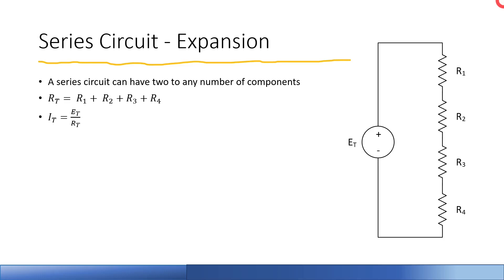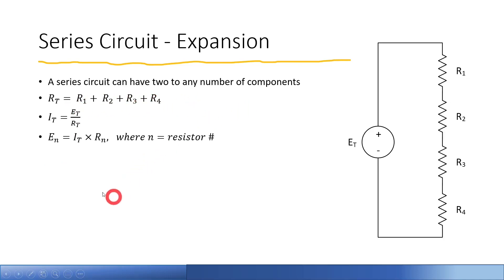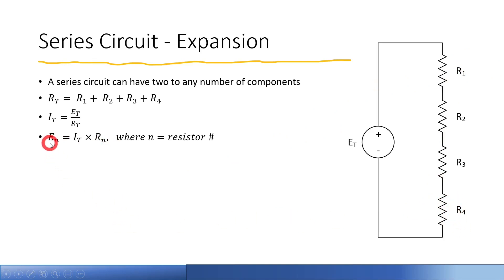We can use our total resistance value and our total voltage value to get our total current value. To get individual voltage drops, we use the same formula. The letter N represents whatever number resistor you're talking about — substitute the number in. For example, if you're talking about the last resistor, you'd say E sub 4 equals I total times R sub 4.